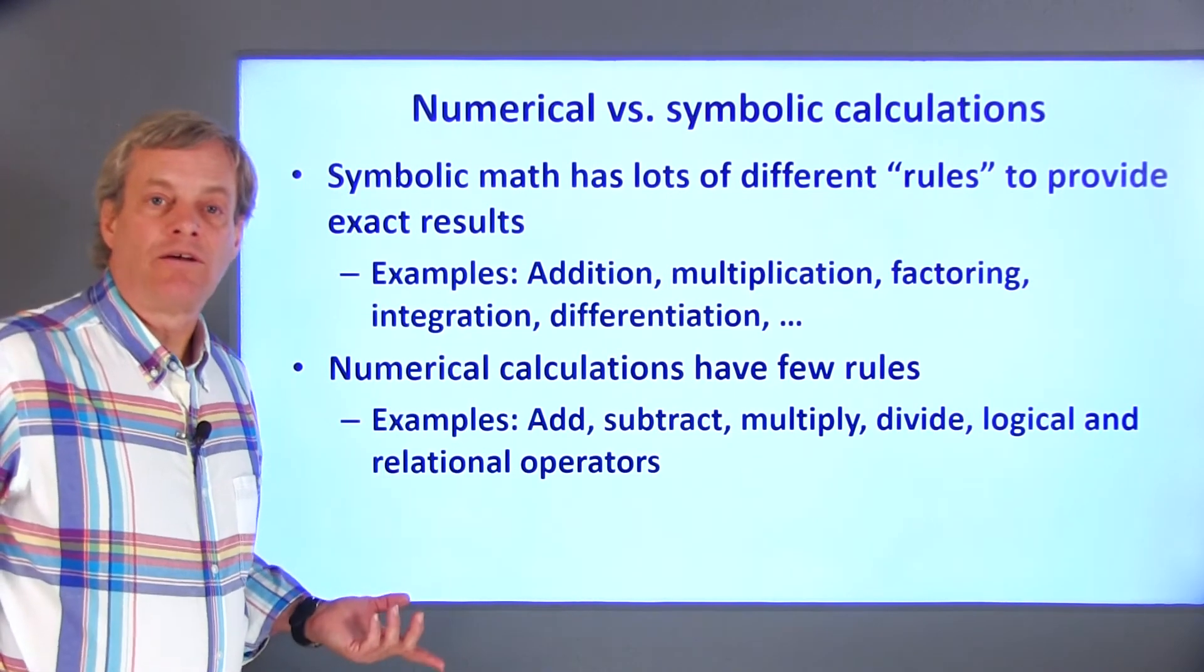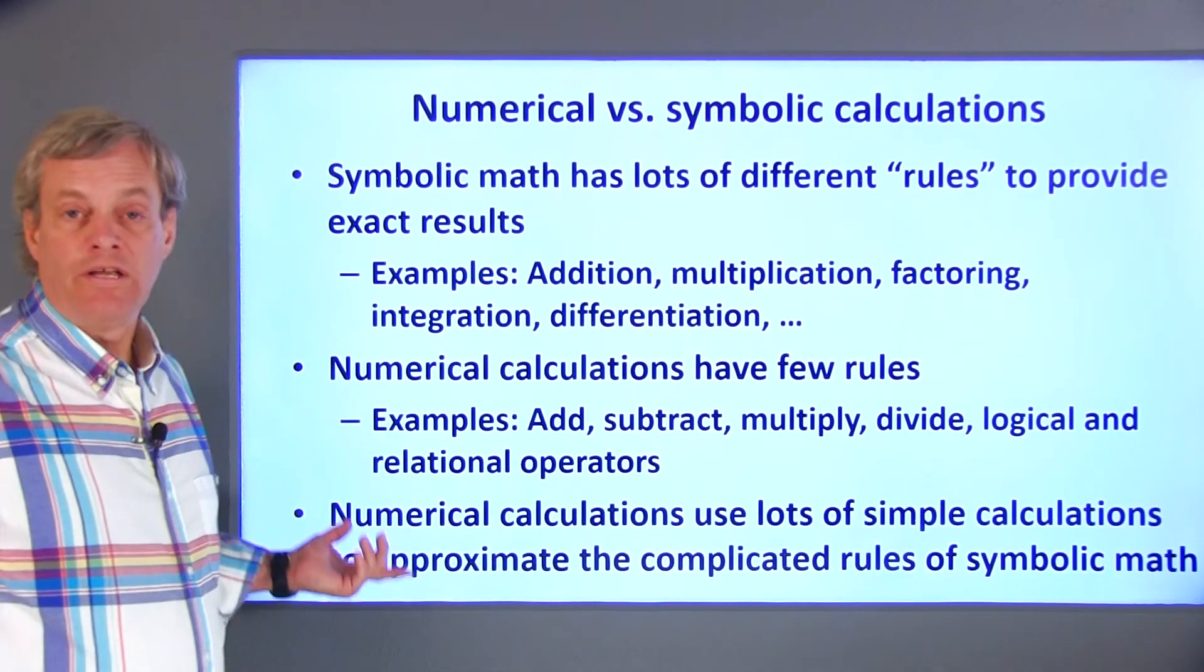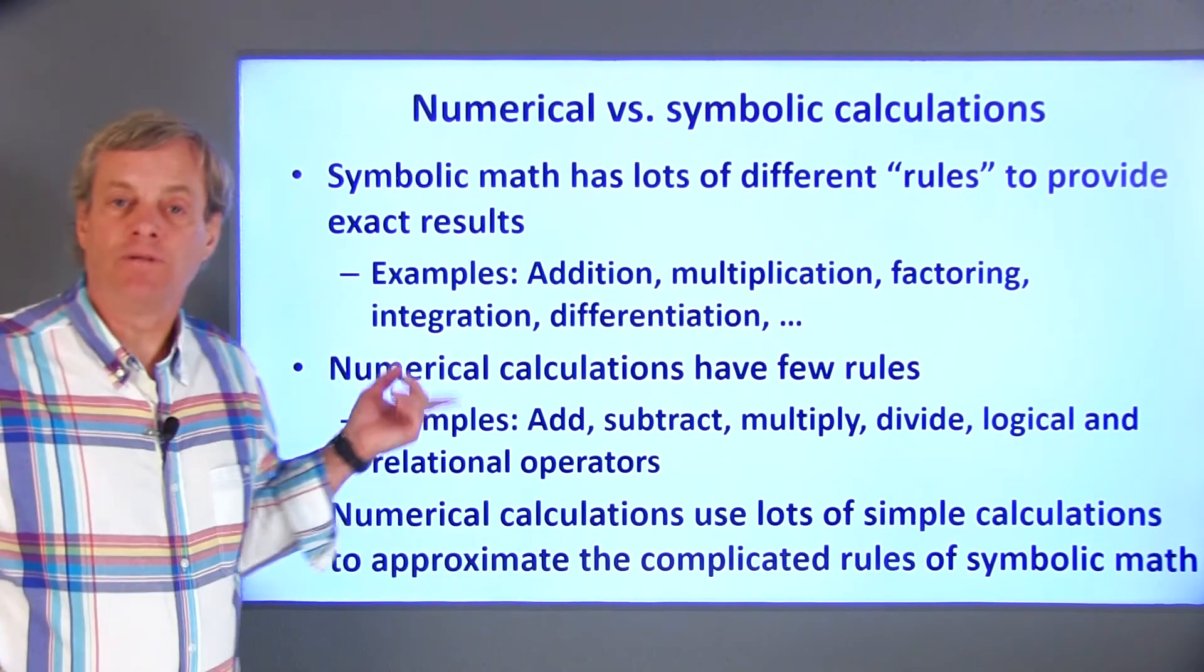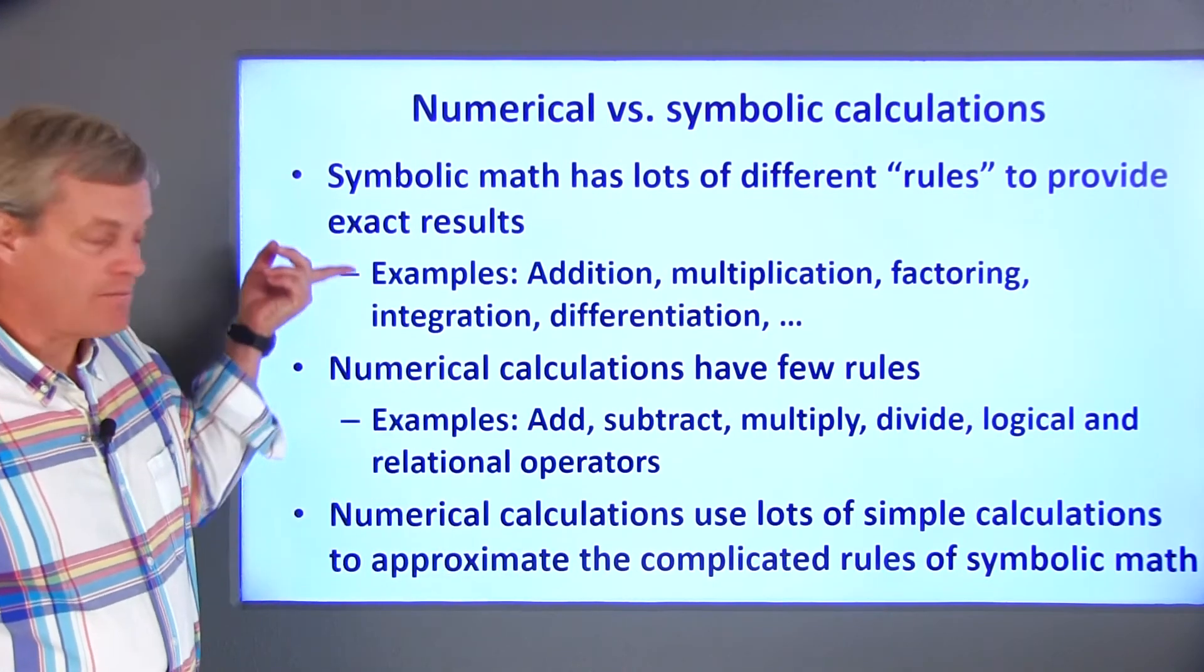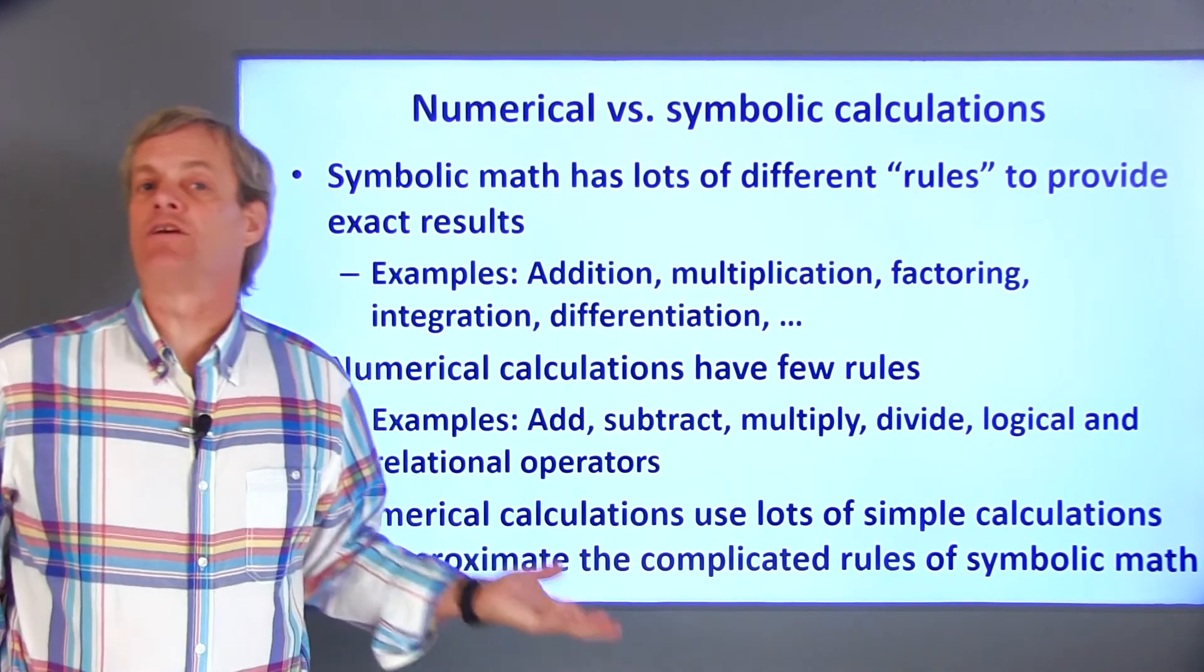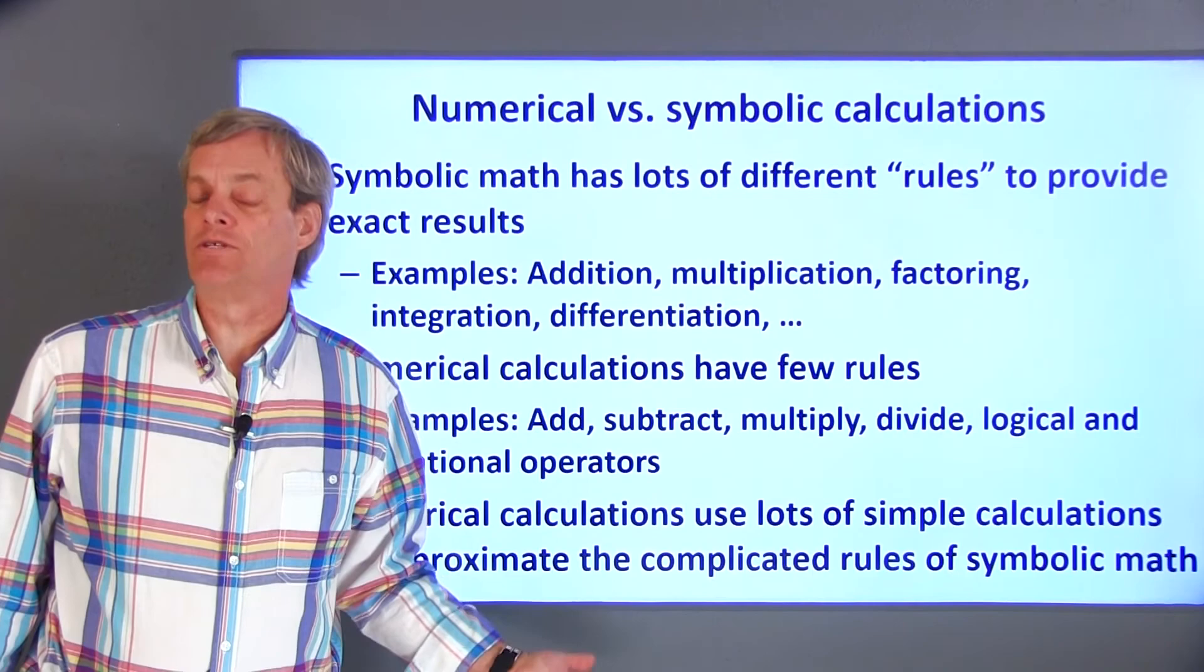So when a numerical calculation such as a square root or an integration is performed, the computer might perform many simple operations in order to approximate the corresponding symbolic calculation. This can result in accumulating enough error that the result is useless.